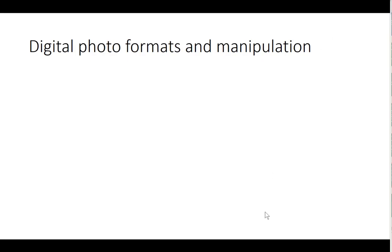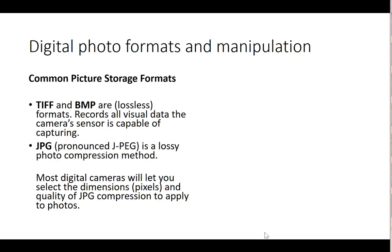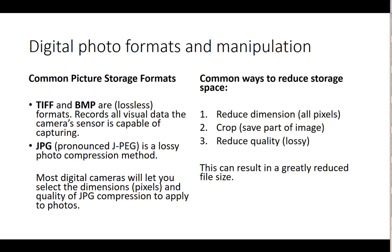The way digital photos work, there is a format and a way to manipulate the size. Common picture formats are TIFF and Bitmap — these are lossless formats that can be recorded in high-quality digital cameras, typically used by professionals to capture all of the camera's sensor information. Then there's the JPG, pronounced JPEG — a lossy photo compression method used for photographs. Most digital cameras let you select the dimensions in pixels and the quality of the compression applied to photos.